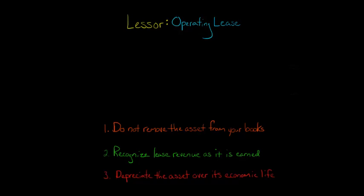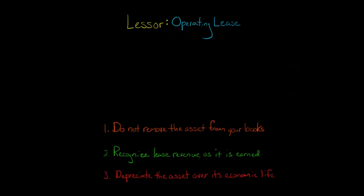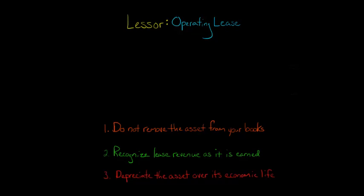In this video, we're going to talk about how to account for an operating lease from the perspective of the lessor. It's actually a lot simpler than when we did a finance lease from the perspective of the lessor, in that you don't remove the asset from your company's books — you're not going to be setting up a lease receivable and debiting cost of goods sold. In each period, you're going to recognize lease revenue as it is earned.